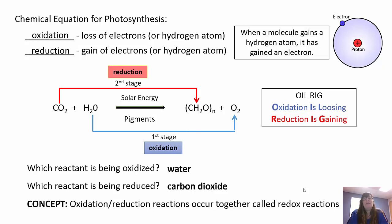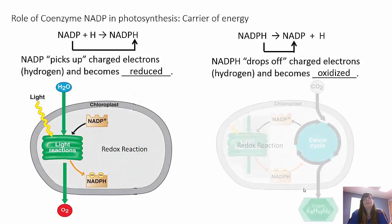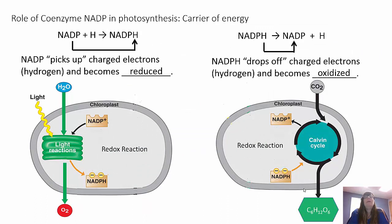Redox reactions occur together — that's why we call them redox, oxidation-reduction reactions. Anytime something loses an electron, something else is going to gain an electron. The coenzyme NADP+ in photosynthesis acts as a carrier of energy — an electron carrier. NADP+ picks up charged electrons and hydrogen and becomes reduced to NADPH. Remember P for photosynthesis: NADP is photosynthesis, NAD is respiration.